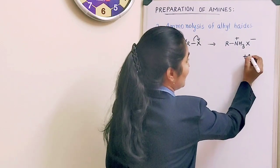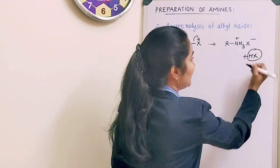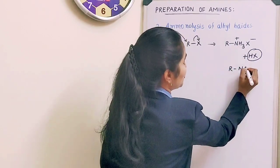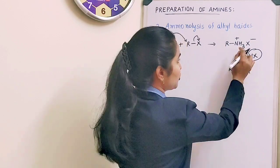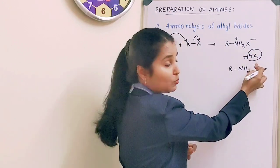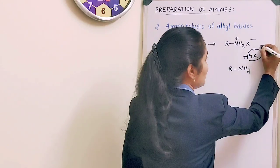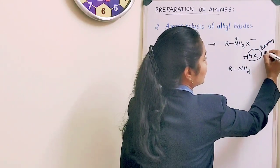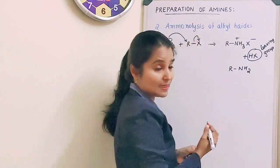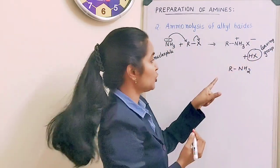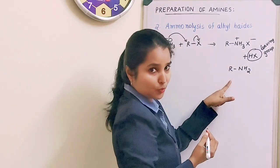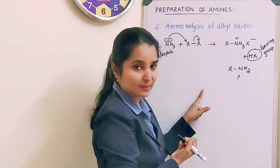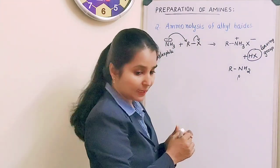From this intermediate, one HX will leave as the leaving group. So you get R-NH₂, which is a primary amine. HX is the leaving group in this step.